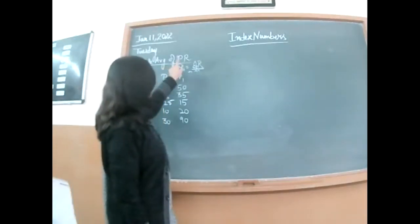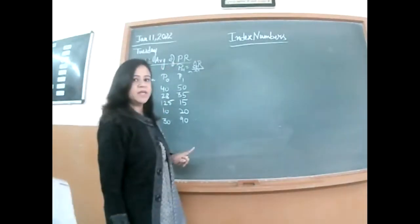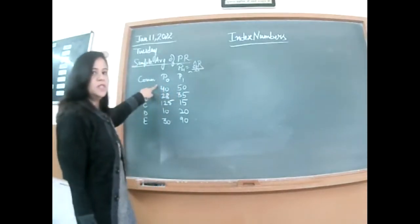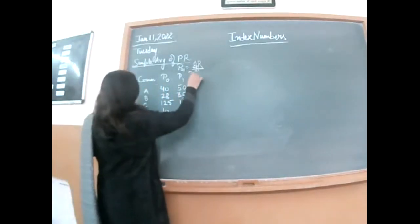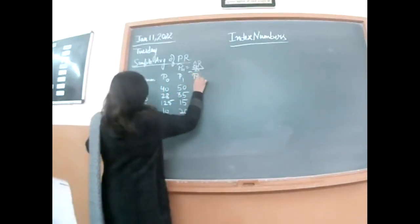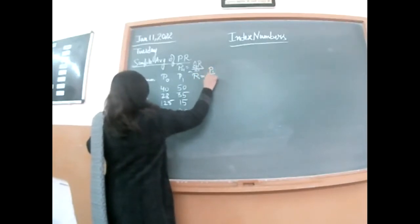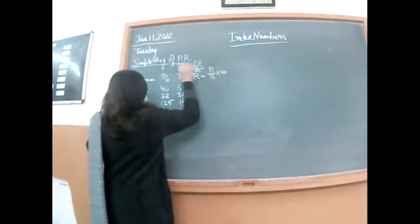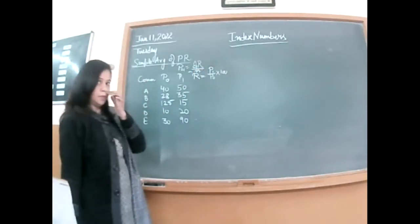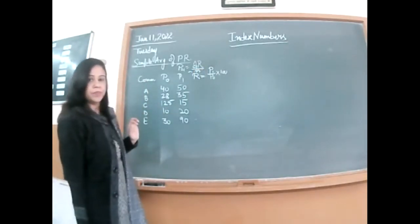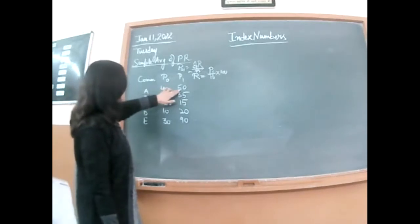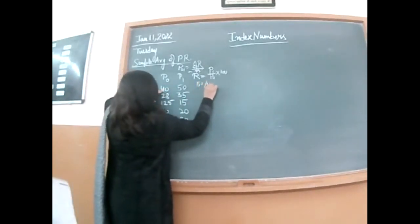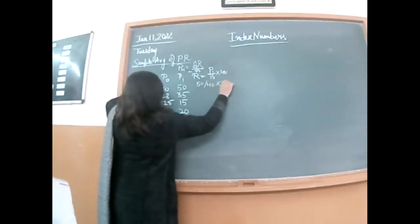We have simple average of price relatives. We have P1 and we have P0. Firstly, we will find out R. What is R? R equals P1 over P0 into 100. So this is P1, this is P0. You will do the calculations.